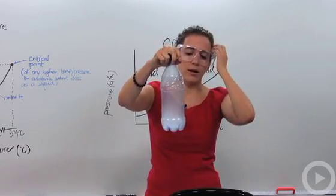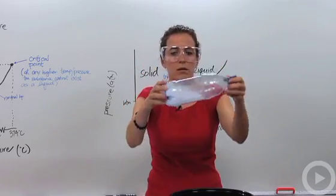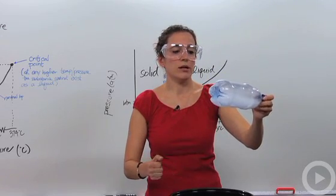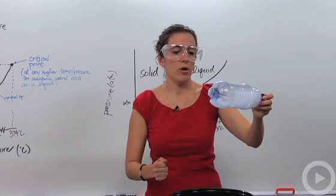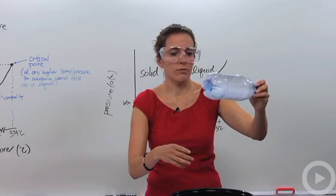Okay. So if we look back at our graph, you notice this is continuously sublimating. And what we want to do is we want to continue to make the pressure high enough where it'll stop sublimating and actually go to a triple point where you can see all of these at the same time.